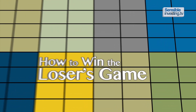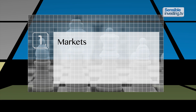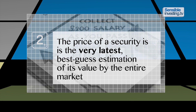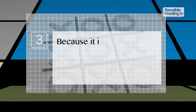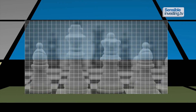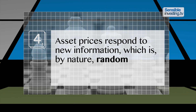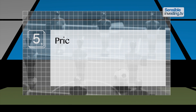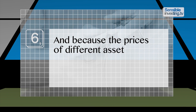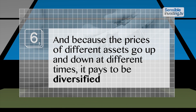These are very important principles with implications for every investor. So before we apply these principles, let's recap. Markets are competitive and there are two sides to every trade. The price of a security is the very latest best-guess estimation of its value by the entire market. Because it incorporates and reflects all the available information, markets are therefore very efficient. Asset prices respond to new information, which is by nature random, and price movements are therefore random as well. And because the prices of different assets go up and down at different times, it pays to be diversified.